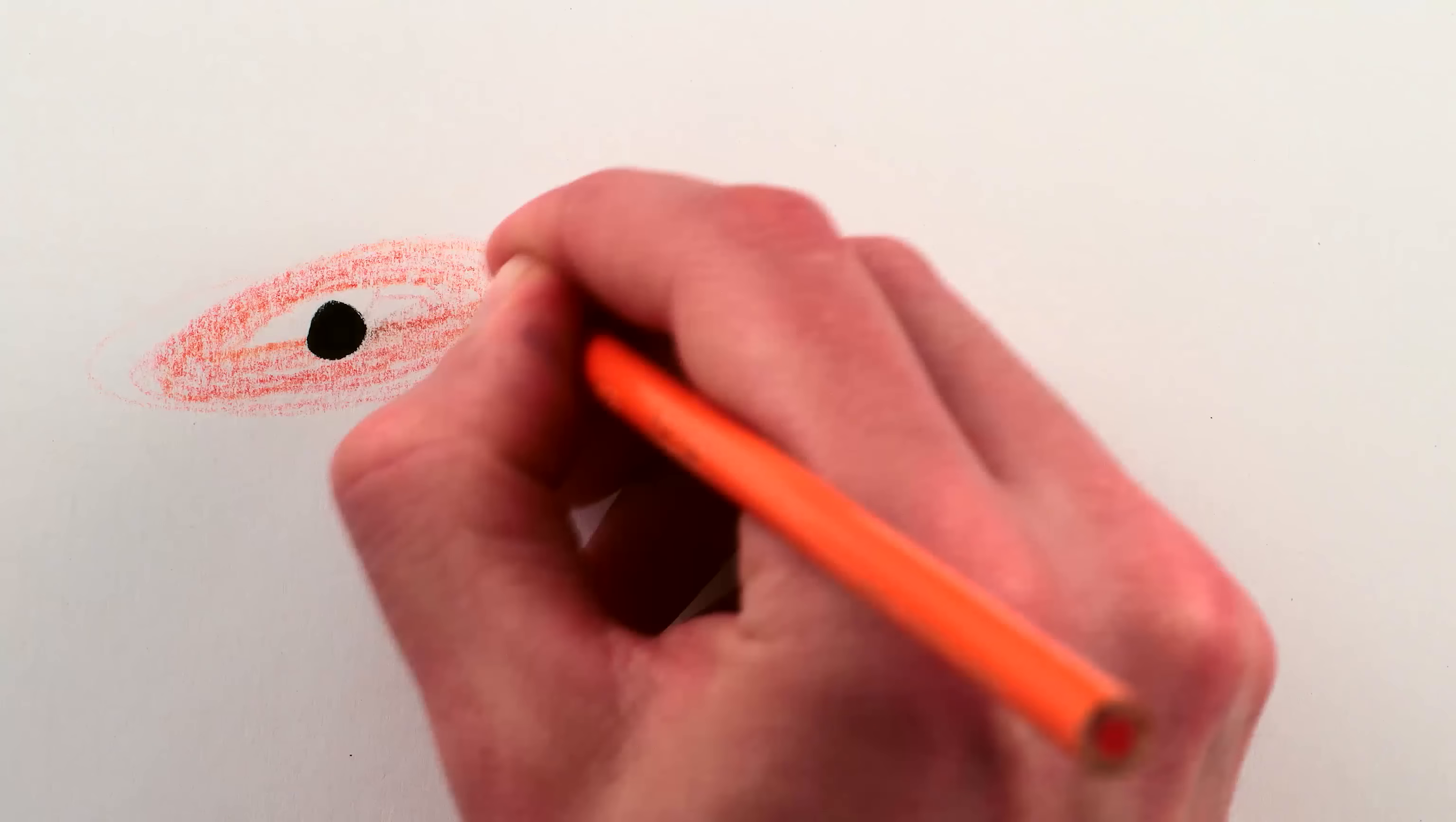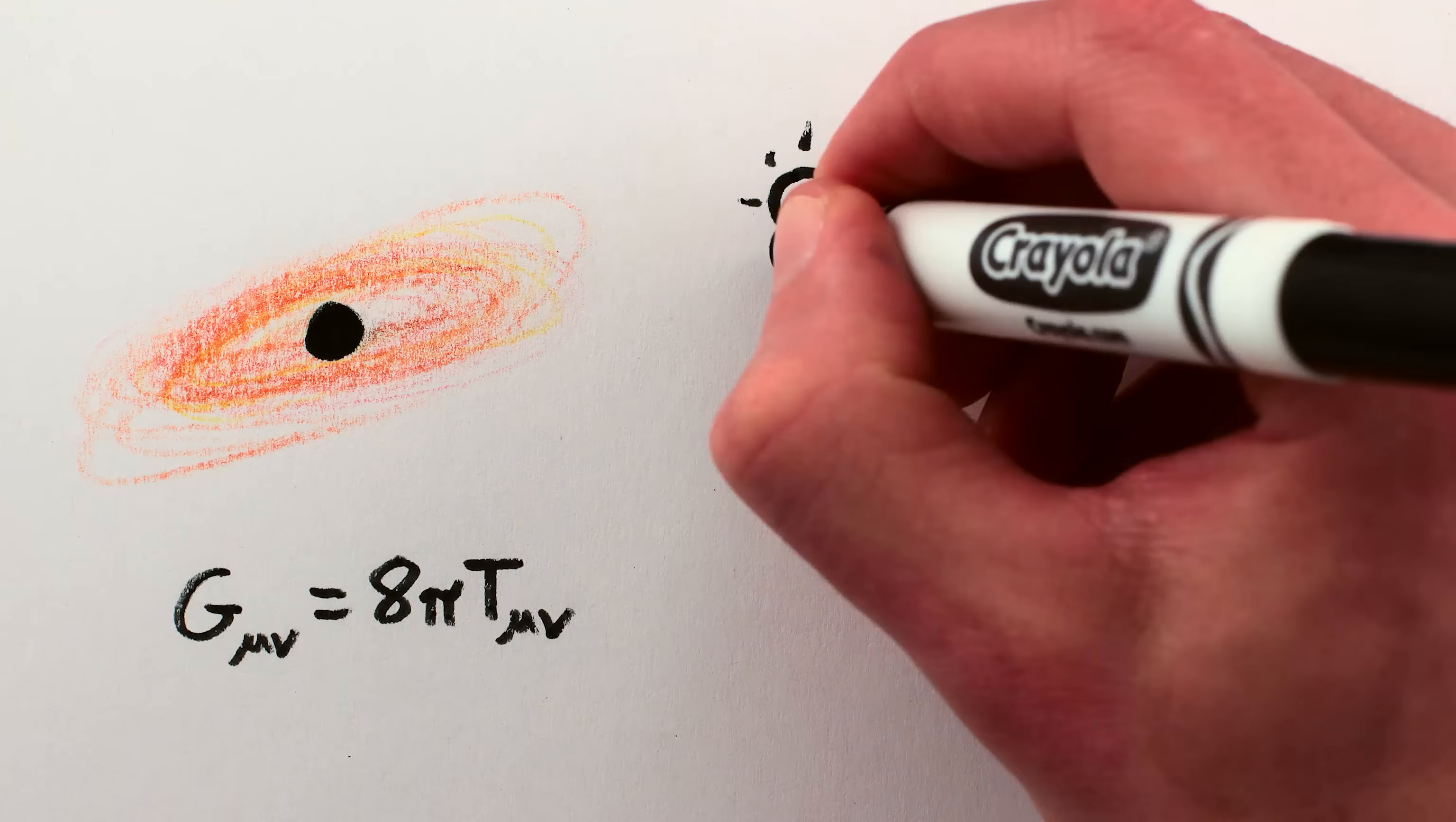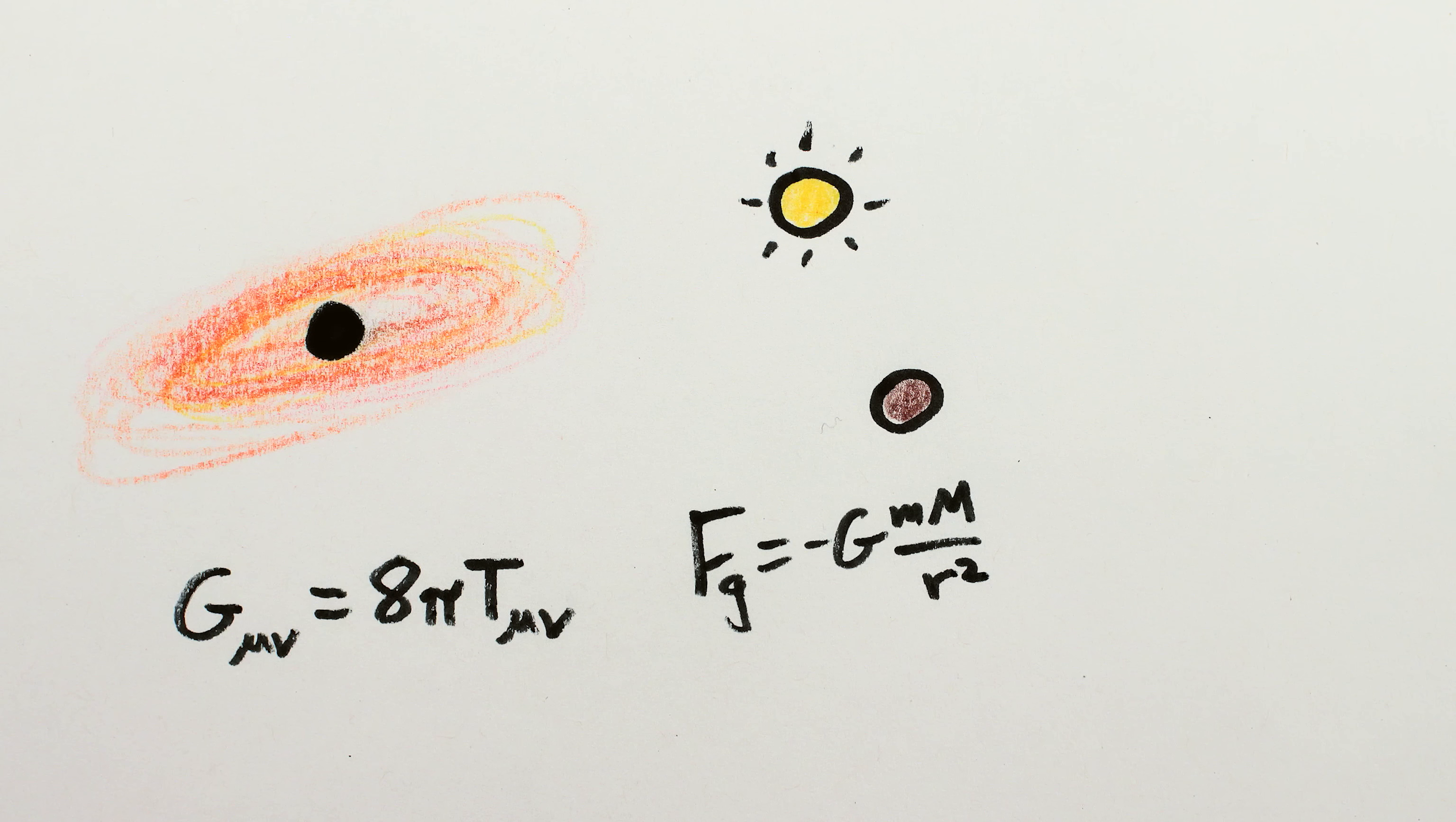Similarly, when the force of gravity is really strong, like near a black hole, gravity is better described by the mathematics of general relativity. And only when the forces in question get a bit weaker, for things farther apart or with less mass, does gravity start to match up with Newton's Law of Gravitation.